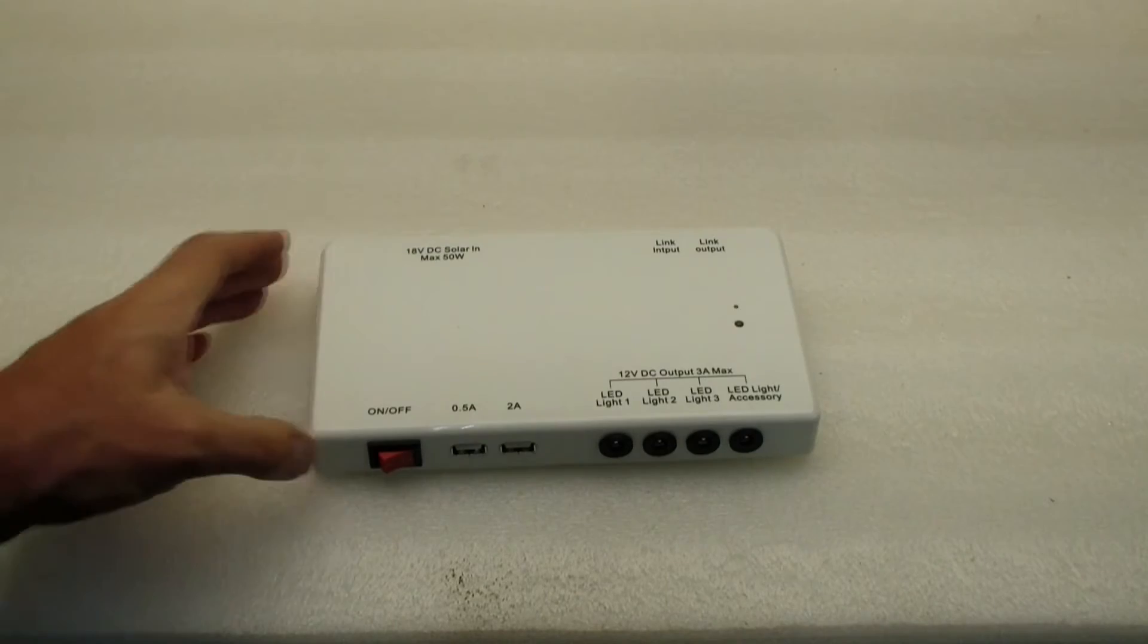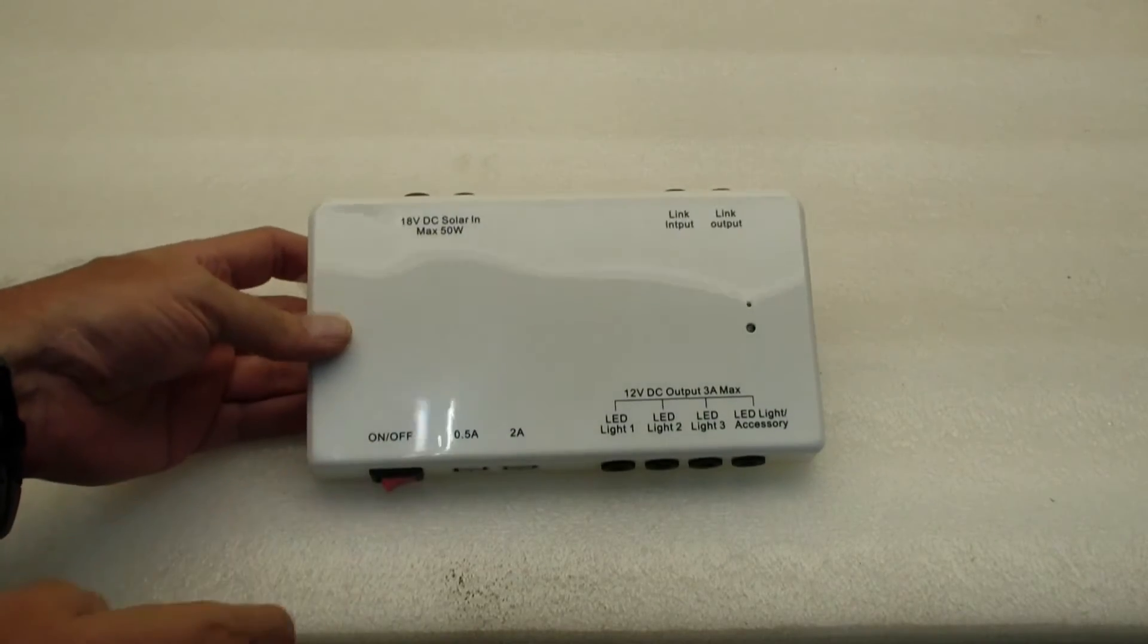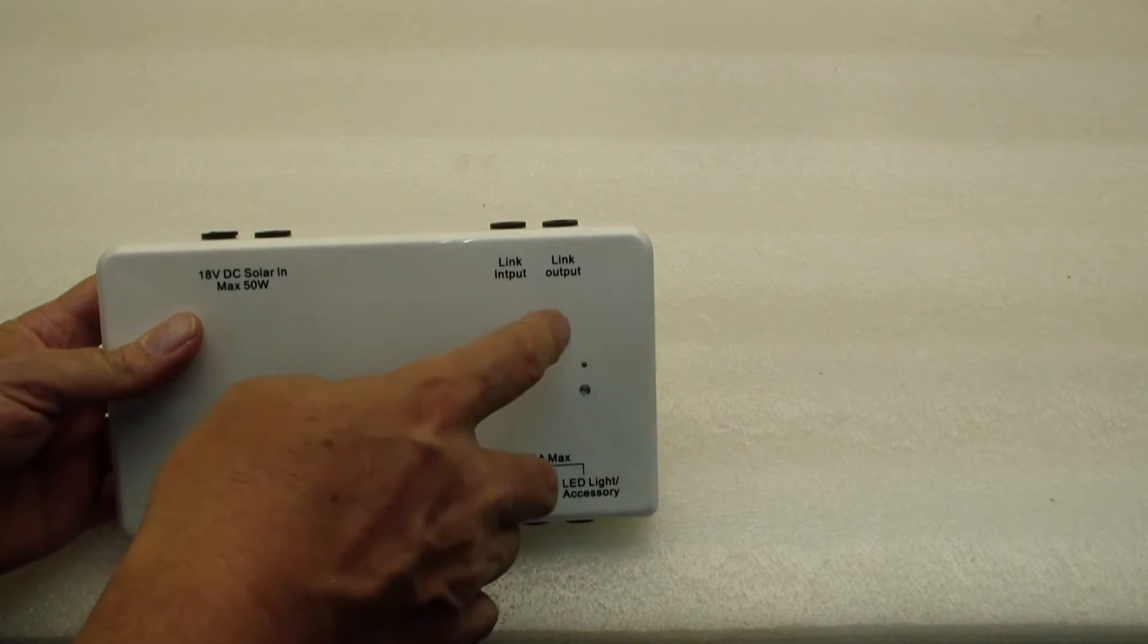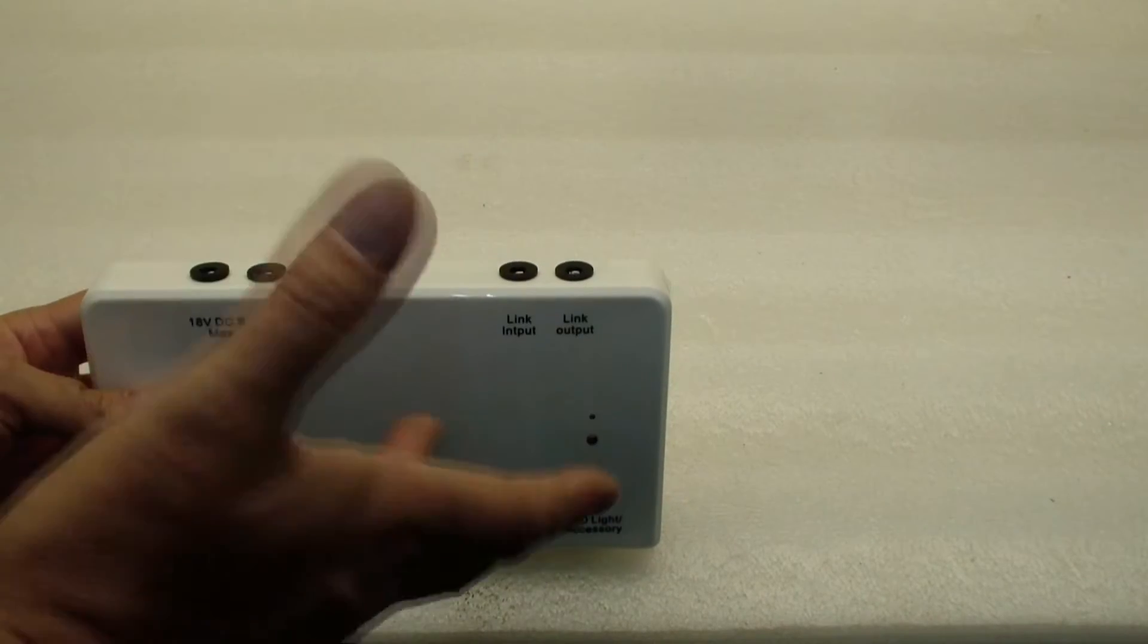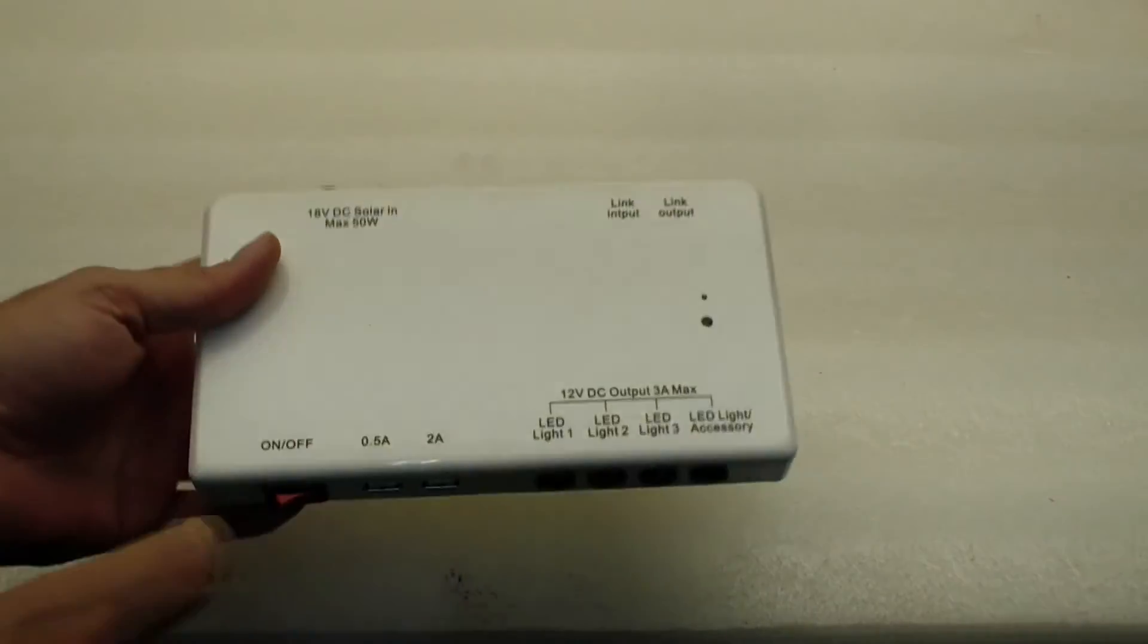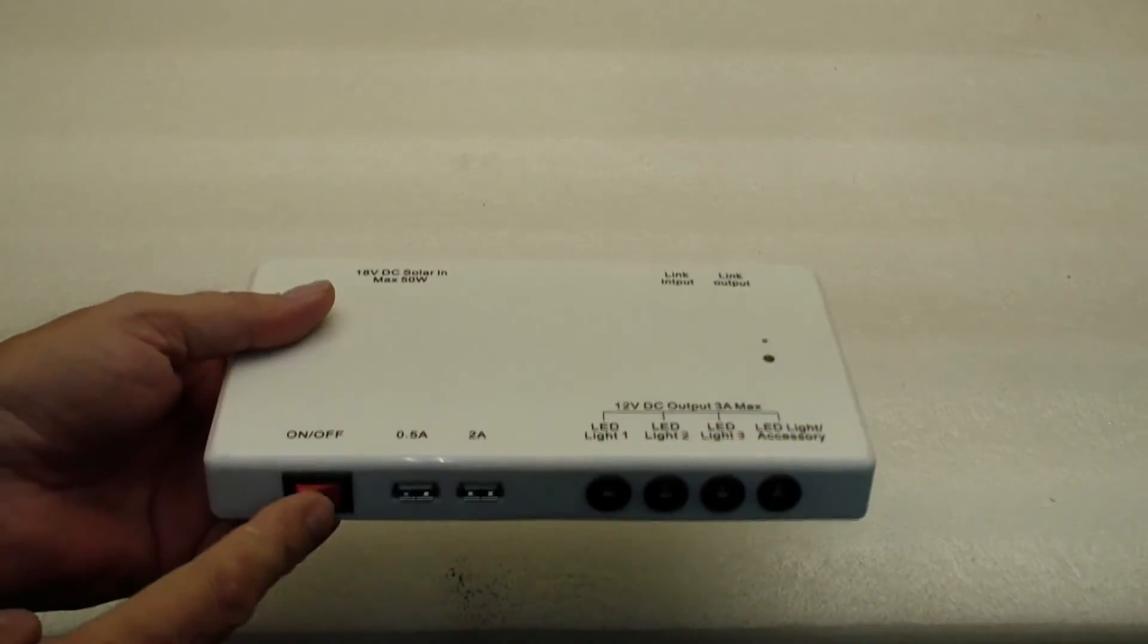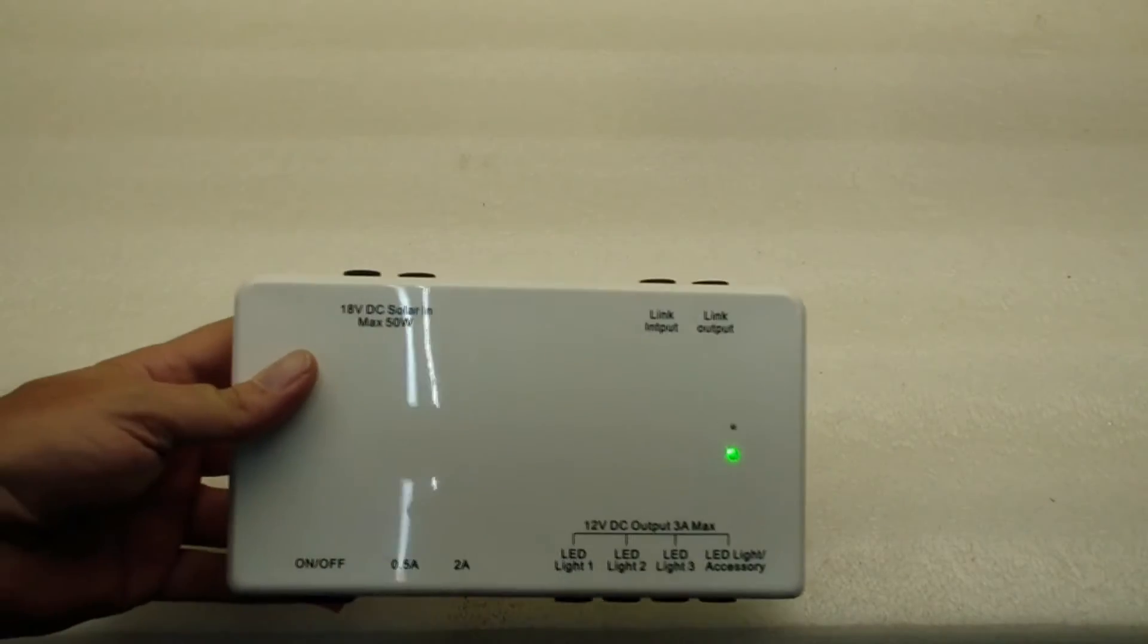Here's the charger unit. It has batteries into it as well. Each base unit has its own batteries that can charge up, and this has the batteries along with the ability to charge. The solar cells plug in here, and then it has link input and link output. You'd hook multiple of these things up together if you wanted to. It's got two USB chargers and the ability to have up to four lights. If you notice the on-off switch, we turn this thing on, the green light came on, meaning it's running on battery even with no solar power hooked up to it.